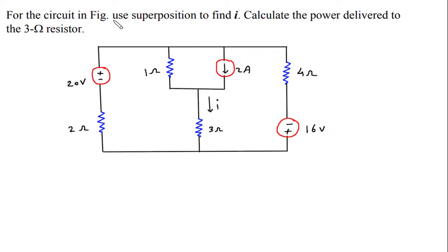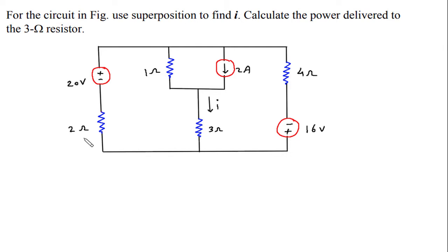For the circuit in figure, use superposition to find I and calculate the power delivered to the 3 Ohm resistor. We have to find this I and power delivered to this 3 Ohm resistor using superposition theorem. There are three independent sources in this circuit.